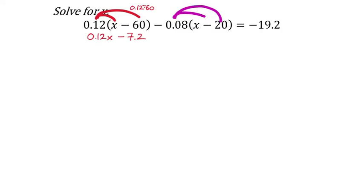Now I need to distribute 0.08 into the parentheses. Negative 0.08 times x is just negative 0.08x. And negative 0.08 times negative 20 comes out as positive 1.6, so I'd write it as plus 1.6. That's the distribution. This equals negative 19.2.